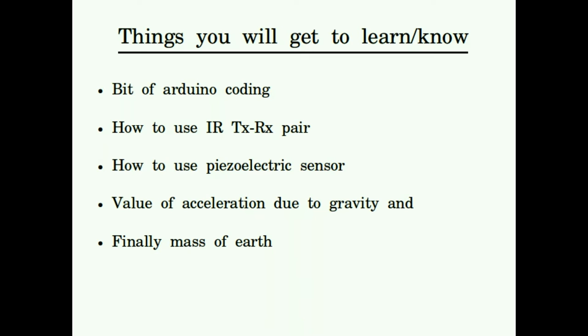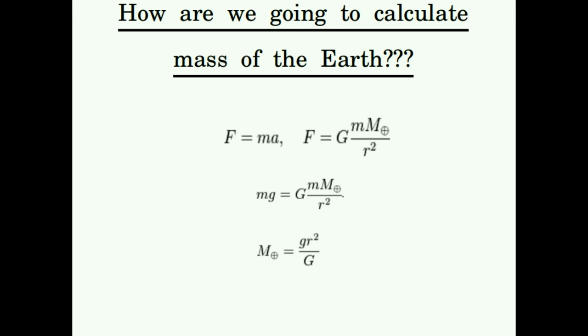The method we are going to follow was used by scientists who intended to find the mass of Earth in the early 19th century. It uses two equations: Newton's second law and Newton's law of universal gravitation. If you substitute Earth's gravity g for the acceleration term and combine these equations, the small m — the mass of the object under test — cancels out on each side, and we can solve for the mass of the Earth.